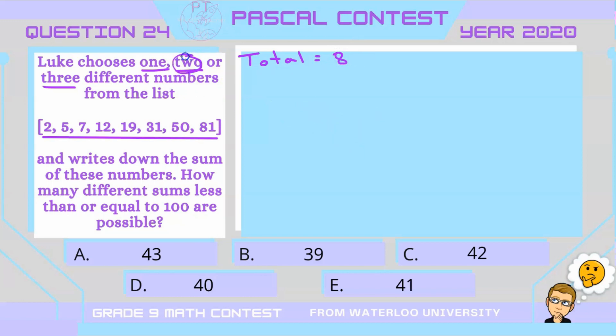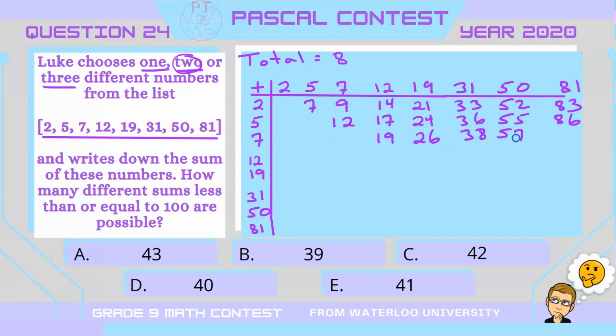What about if Luke chooses two? Let's create a little table here to see what those would be. All right, so from this table, when taking the sum of two numbers, we notice a couple of things. First thing that we notice is that if we take one number and add it to the next number, we get a number from the original list, meaning two plus five is seven, five plus seven is 12, seven plus 12 is 19.